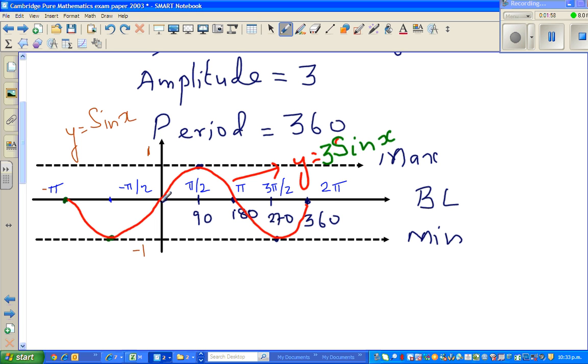So it starts at baseline, hits the maximum, hits the baseline, hits the minimum, and back to baseline. And if you go backwards, it is the same cycle. From baseline, it goes to the minimum, and then it reaches the baseline. So this is the graph they were looking at.